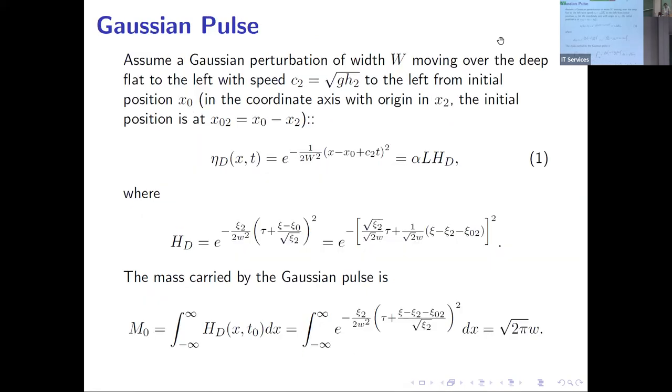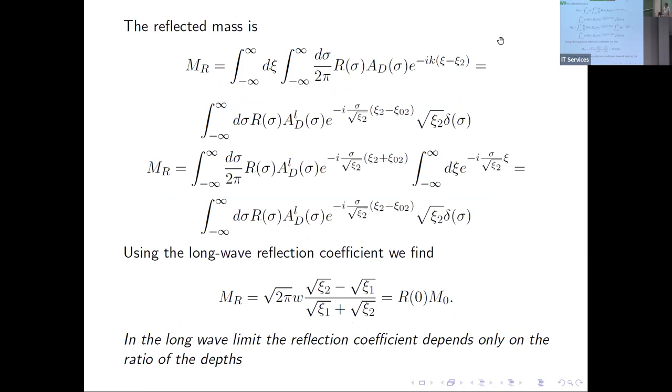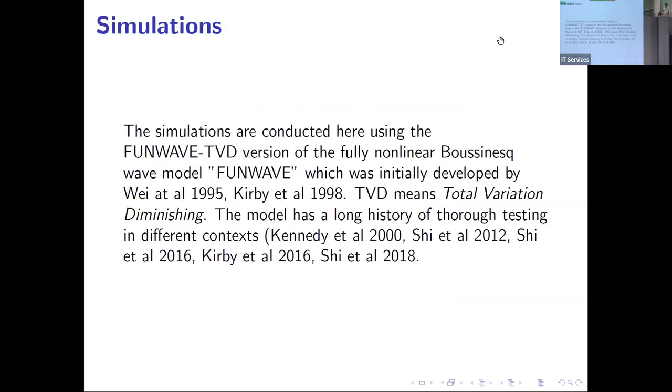What happens if we have not a monochromatic wave but a Gaussian pulse? Then we integrate over wave numbers. This is our packet. For the mass carried by Gaussian pulse, we get this expression. It's proportional to the width of the pulse. For the reflected mass, we get this expression. In the long wave limit, the reflection coefficient depends only on the ratio of depths.